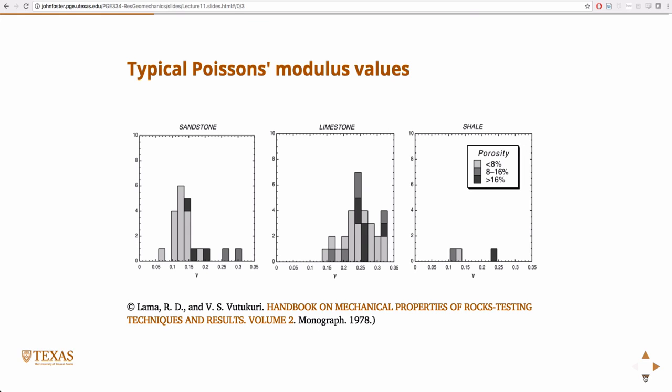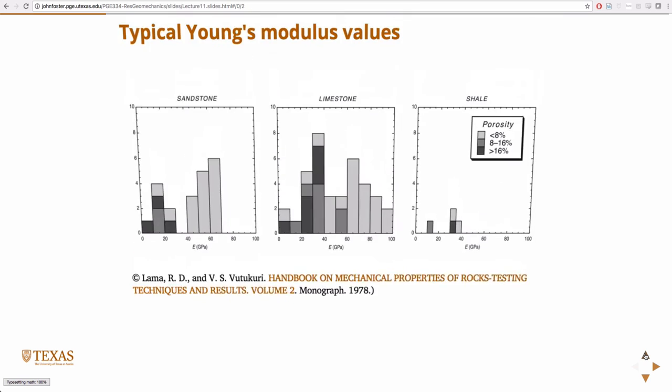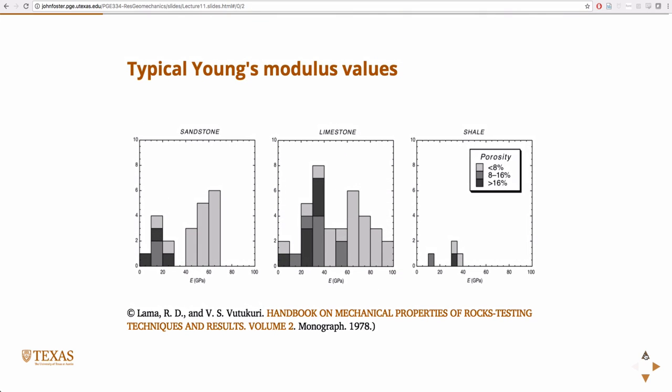What about aluminum? About 0.29 maybe, yeah, for the Poisson ratio. For Young's modulus, steel is like 200 GPa. So it's like twice as strong as a rock. 200 GPa.